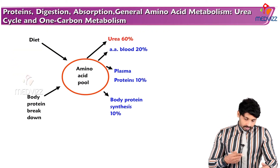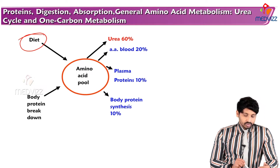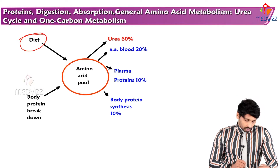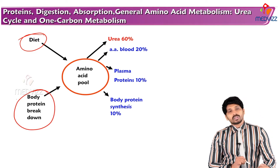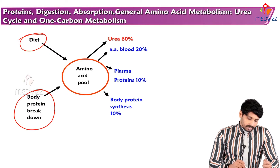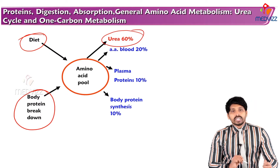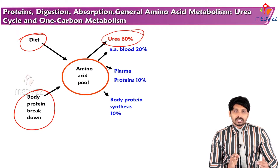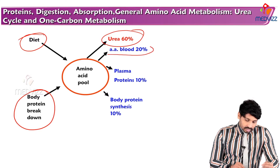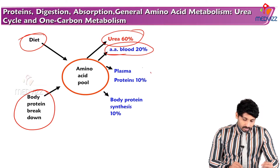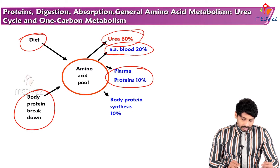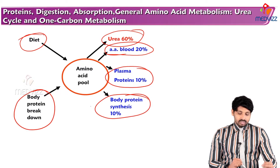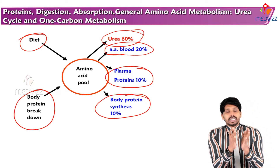Diet is a major contributor to the amino acid pool in our body, and body protein breakdown is also a contributor. From this amino acid pool, 60% is excreted as urea, free amino acids in the blood account for 20%, plasma protein synthesis accounts for 10%, and body protein synthesis accounts for 10%. Overall, breakdown and synthesis are always equal in a healthy person.